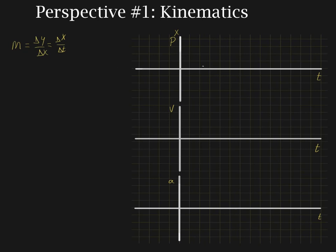For the position-time graph, if we have a constant velocity, then the object's position is changing by the same distance during every time interval. So you might start out at the origin, and then one second later you're here, and the next second later you're here. Constant velocity plots out as a straight line. By definition, average velocity is displacement divided by time, which is delta X over delta T — so the slope of the line is equal to the velocity. The area doesn't mean anything.